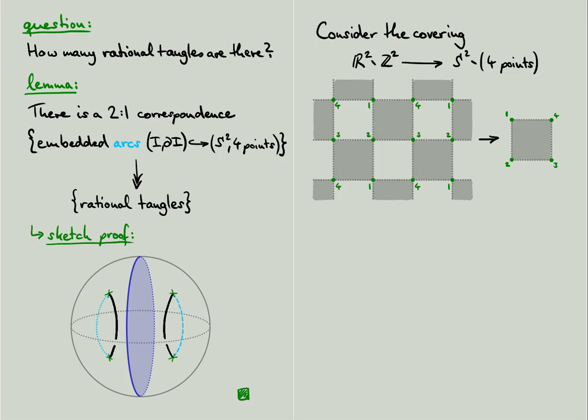Now, having translated the question about the classification of rational tangles into a question about embedded arcs on the four-punctured sphere, let us consider lifts of such arcs. Here is an example. As we can see, the endpoints of such a lift necessarily lie on the integer lattice points. Also, it is easy to see that any such lift is homotopic to a straight line in this covering space. So we see that every rational tangle determines a straight line connecting two integer lattice points, and conversely any such line also determines a rational tangle.